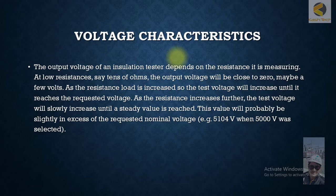The output voltage of an insulation tester depends on the resistance it is measuring. At low resistances, say tens of ohms, the output voltage will be close to zero, maybe a few volts. As the resistance load is increased, the test voltage will increase until it reaches the required voltage. As the resistance increases further, the test voltage will slowly increase until a steady value is reached. This value will probably be slightly in excess of the requested nominal voltage.